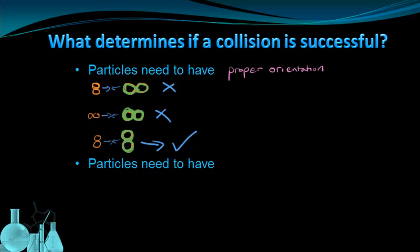The second criteria that particles need to meet in order to have a successful collision is that they need to have enough energy. And for particles, this comes in the form of speed, or kinetic energy. The particles need to have enough speed, or kinetic energy, when they collide to have a successful collision.